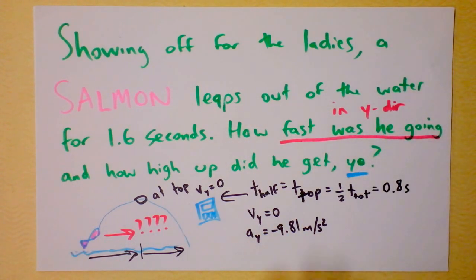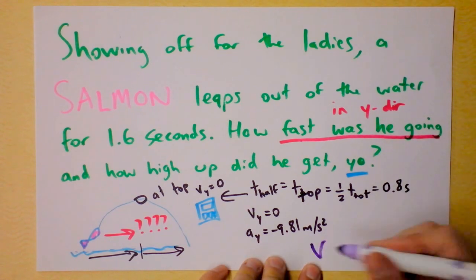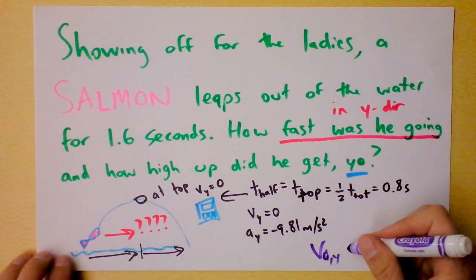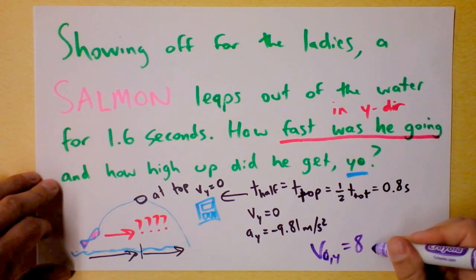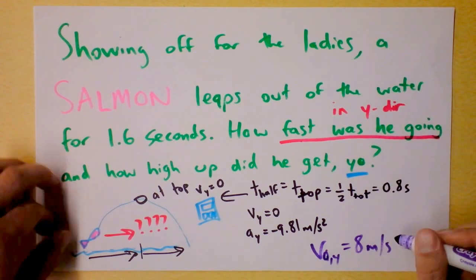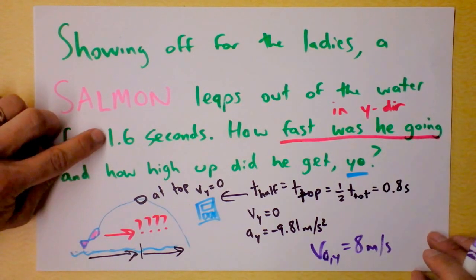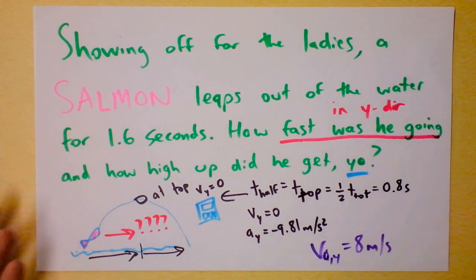In the previous video, we've already answered that question. We found that the initial velocity in the y direction, I guess I'll call it v-naught in the y direction, was 8 meters per second. We were rounding a little bit, but that's how fast the salmon is going upward in order to stay in the air for 1.6 seconds.